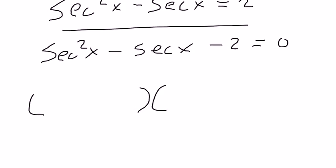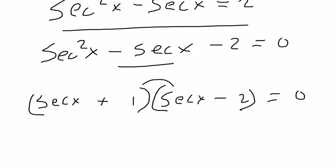And then I'm going to factor. Secant x, secant x, 2, 1. The negative sign would go here. The positive sign would go here. That's the only way you're going to get a middle term of negative secant because this would be positive secant and this would be negative 2 secant.